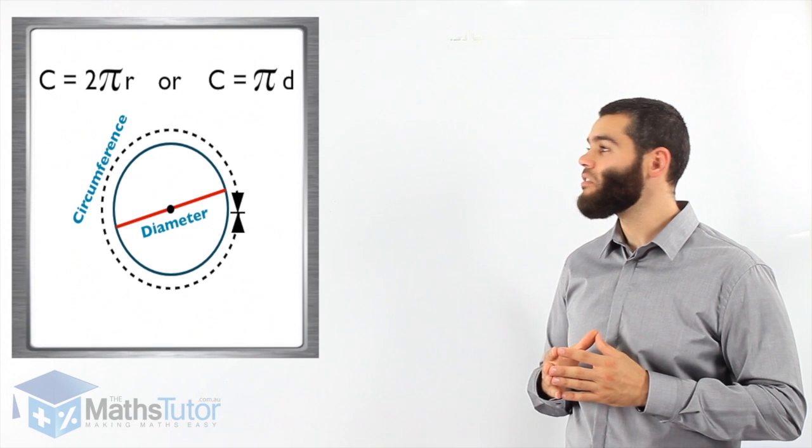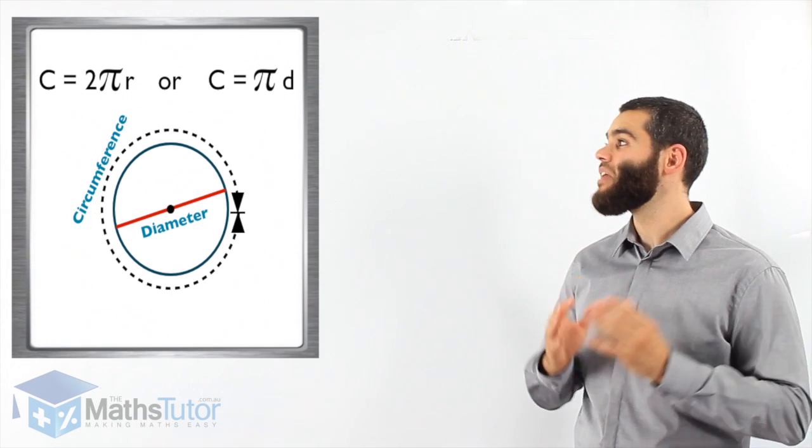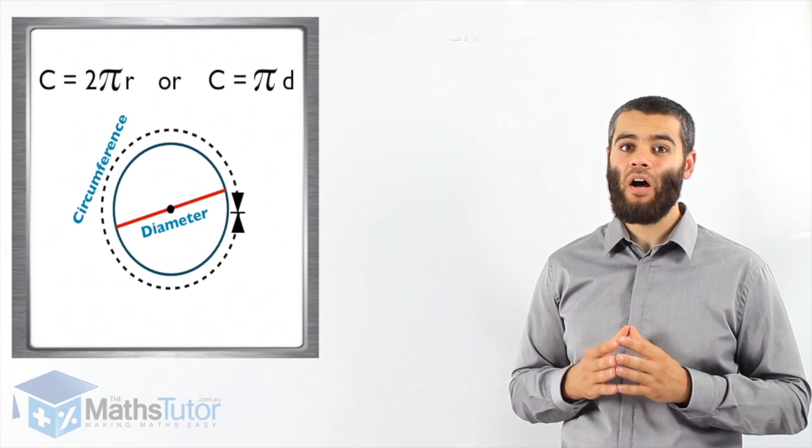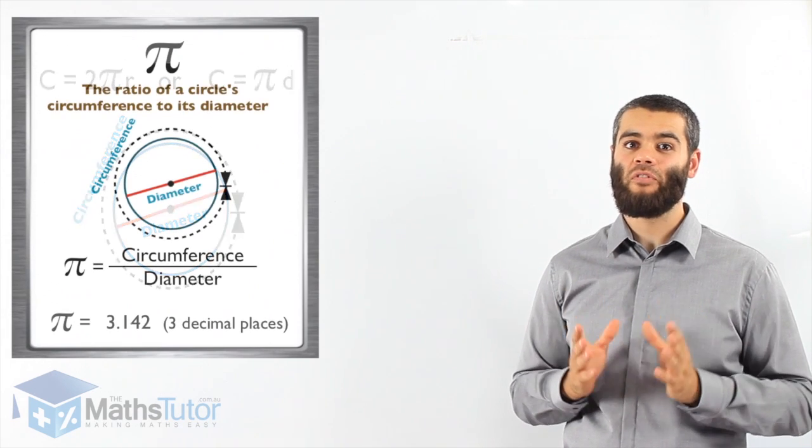Now you may think, what is π? What's that symbol? I've never seen it before. Well, π, we need to look at it quickly before we start working out the circumference of a circle.